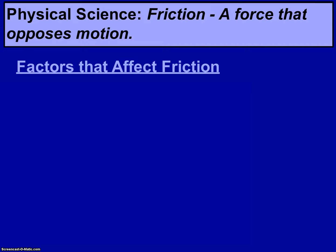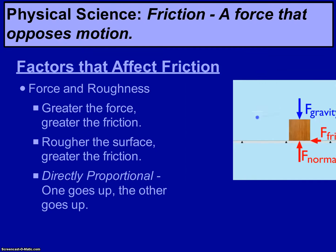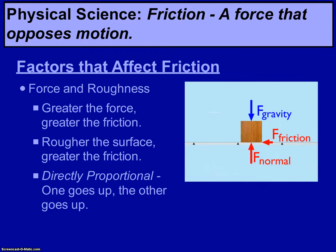There are two major factors that will affect friction: force and roughness. The greater the force, the greater the friction. That's because the force we're talking about is gravity. As gravity pushes down on the block, it pushes the surfaces closer together, which increases the amount of friction. The other factor: the rougher the surface, the greater the friction.